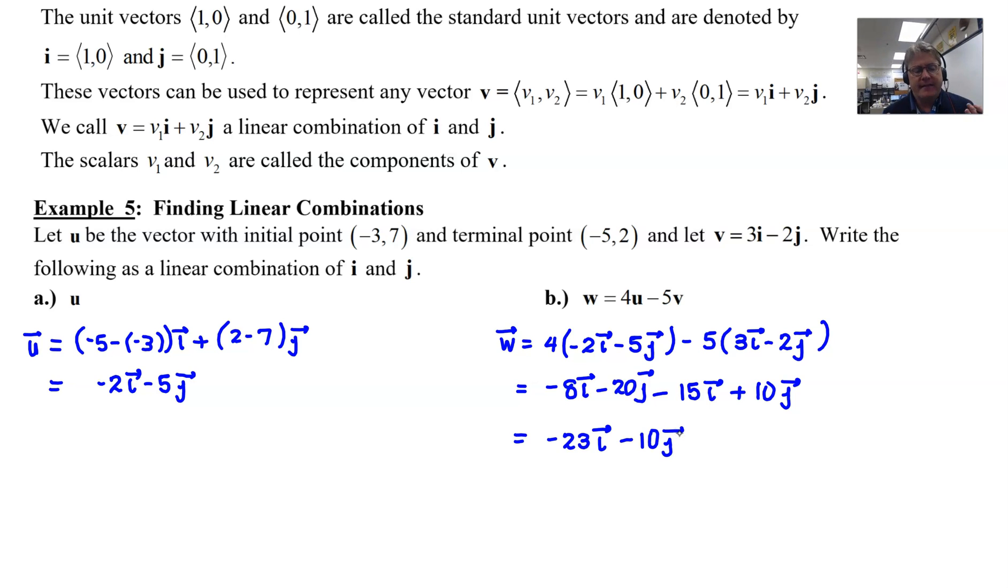Like I said, the i-j form is just another way to write a vector. For instance, if I use the vector v that was given, 3i - 2j, that is every bit the same as (3,-2) in a vector form, right? These two pieces of notation are perfectly reasonable to use all throughout mathematics. I would say on the AP exam, you could use either one.